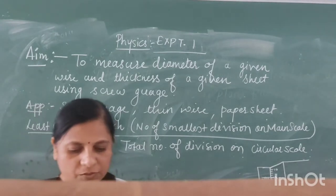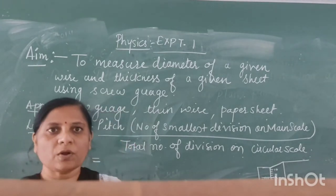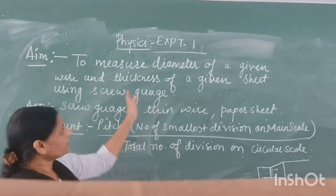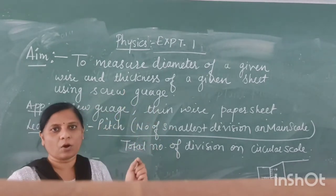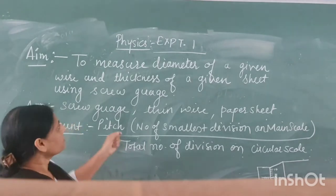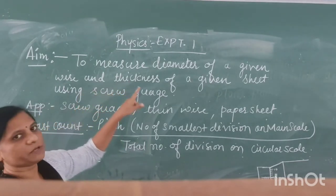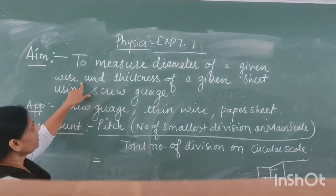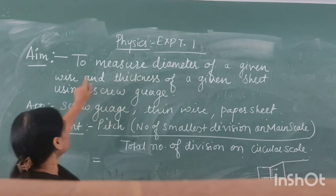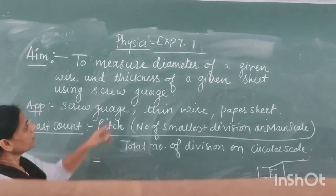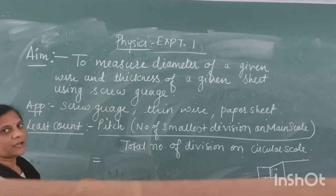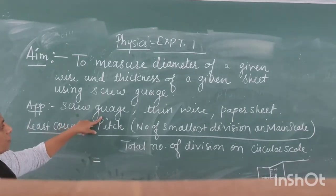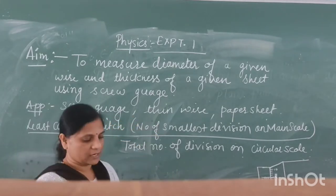Now you should know what a screw gauge is. A screw gauge is an instrument used to find out the thickness of a thin object as well as the diameter of a thin object. The materials required for this experiment are a screw gauge, a thin wire, and a paper sheet.